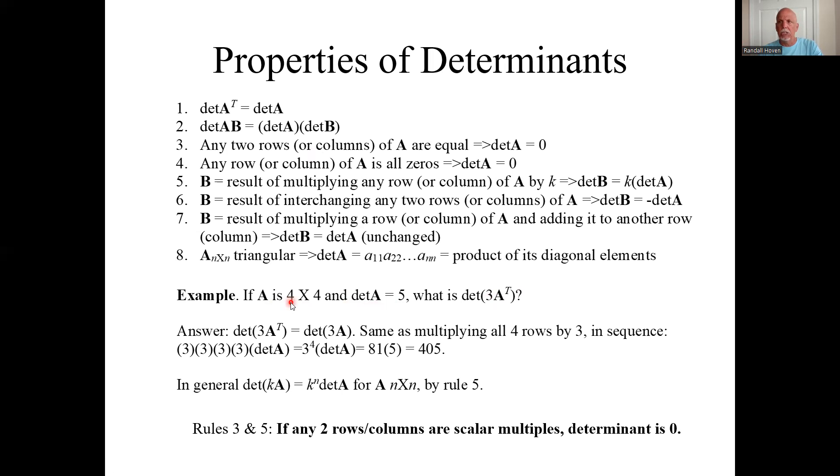And then if it's three, I'm multiplying each row by three. And there's four rows. So I need to multiply by three, four times, or three to the fourth times the original determinant. And I need a calculator for that, but the answer is 405.